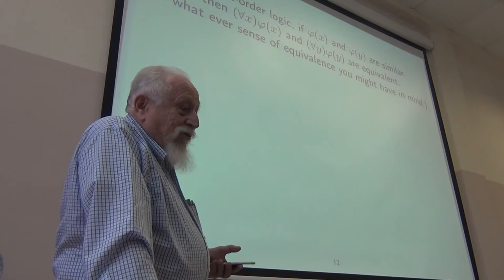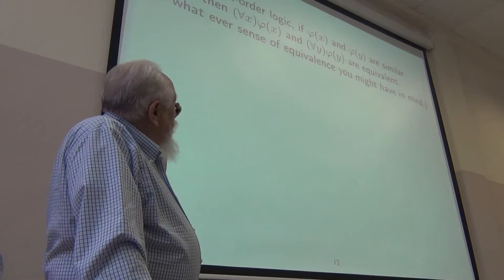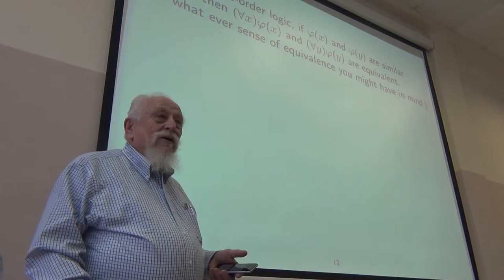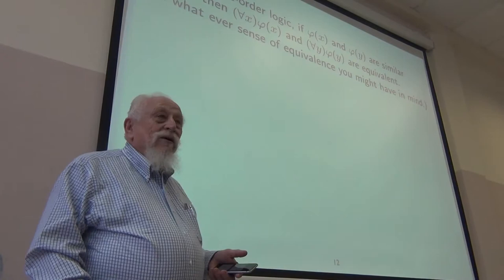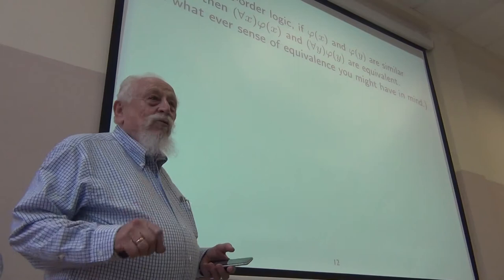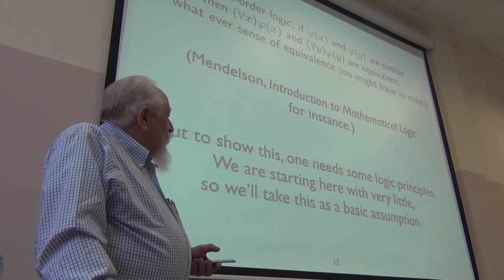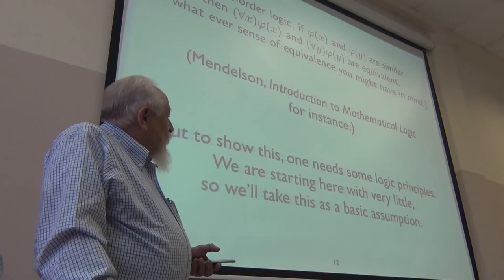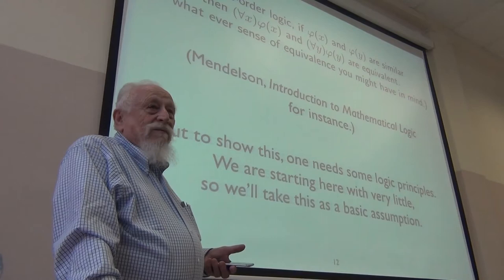In any standard treatment of first order classical logic, if phi of x and phi of y are similar, for-all x phi of x and for-all y phi of y can be proved equivalent in an axiom system, or deduced equivalent in a sequent calculus, or have the same truth value semantically. But since I'm working with very weak systems, we don't have the machinery to prove that equivalence — so I'll take similar formulas behaving equivalently as a basic axiom.